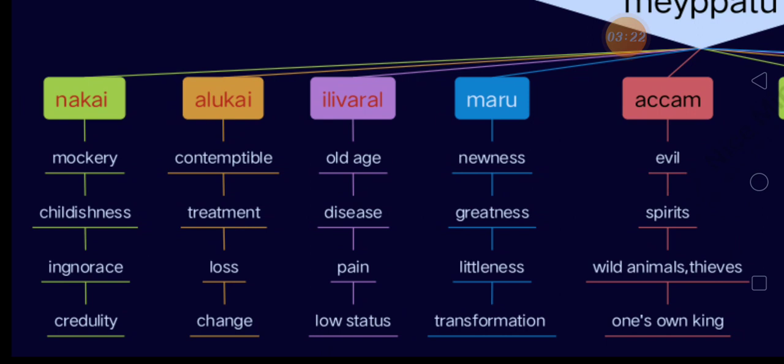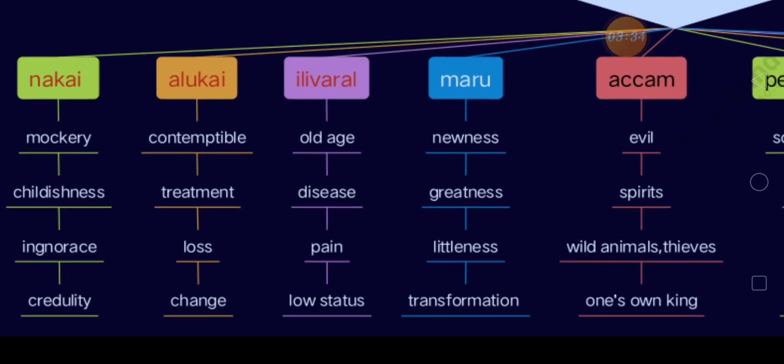The source of Marukai, outside the province of intelligentsia, is also fourfold: newness, greatness, littleness, and transformation. The source of Acham is also fourfold: evil spirits, wild animals, thieves, and one's own king.